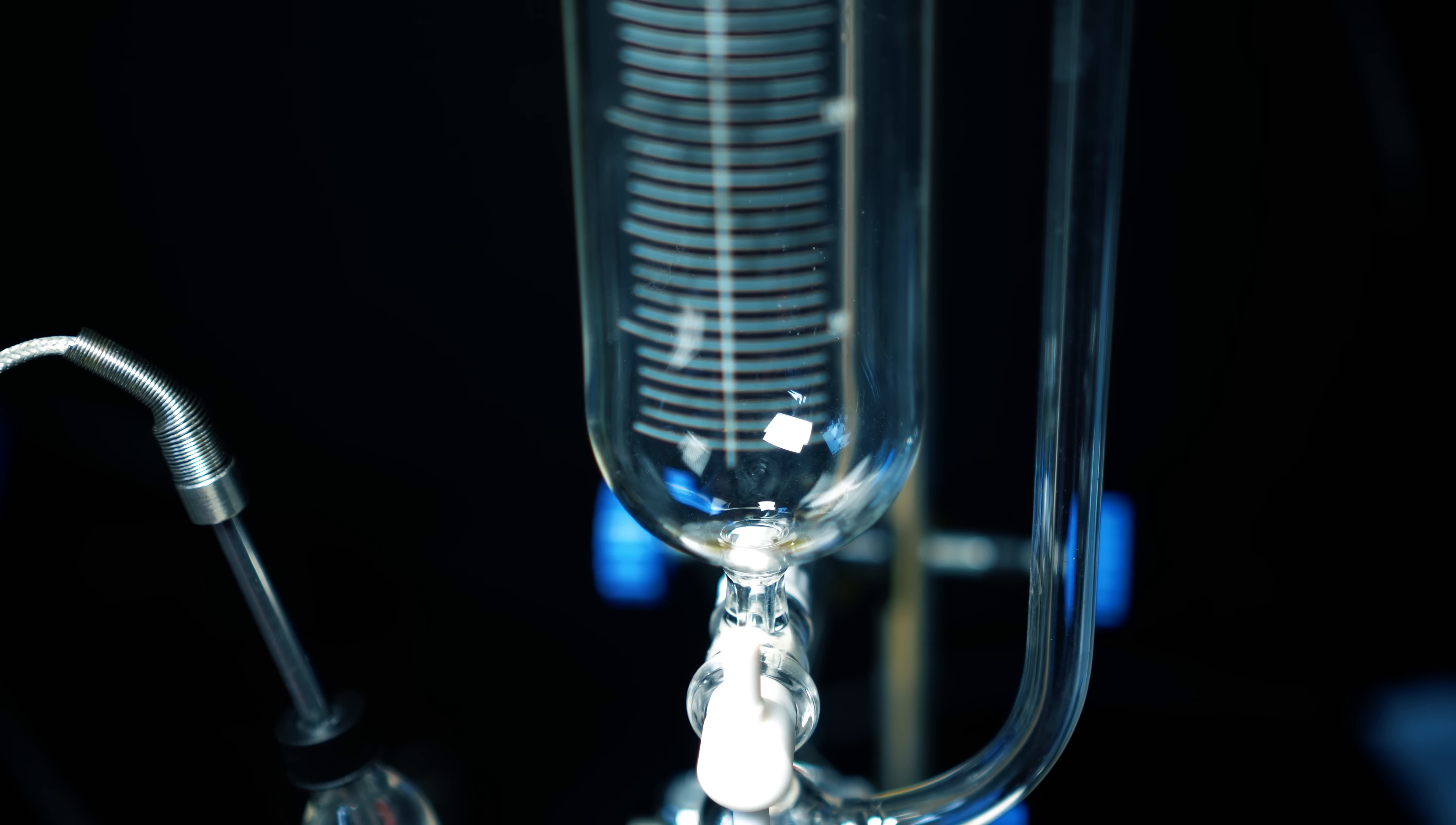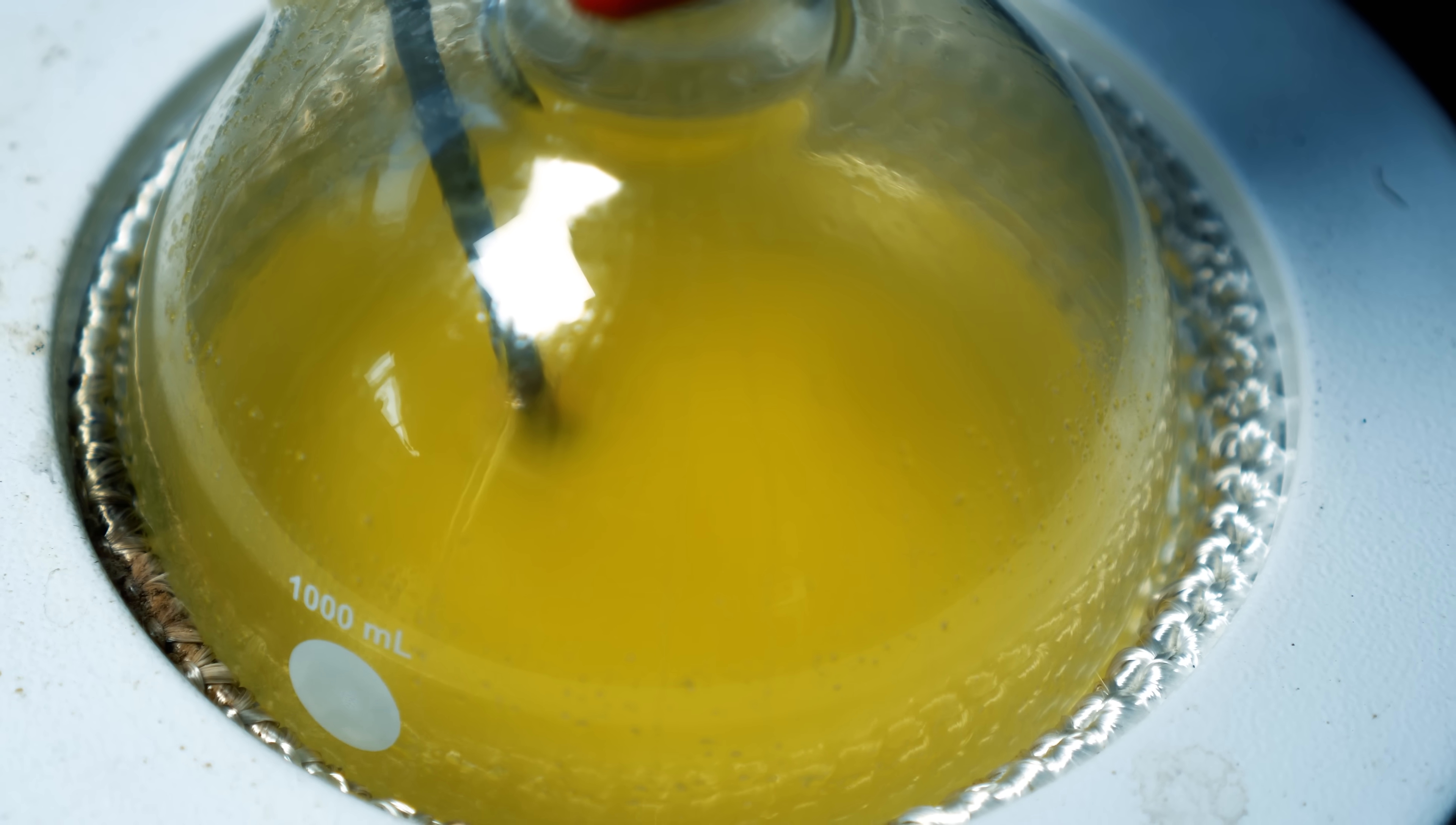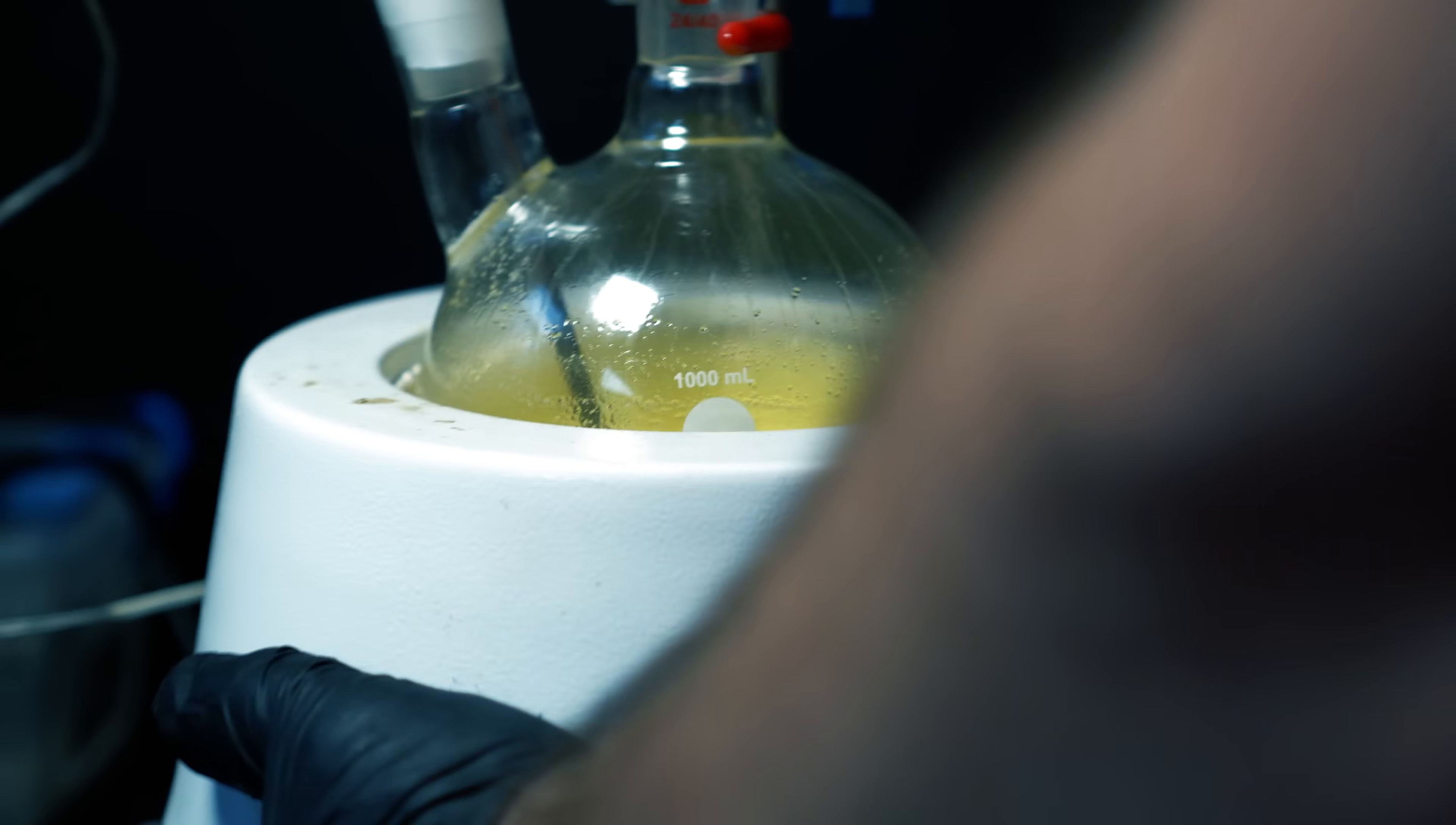Once all the methyl iodide was added, we now need to heat this up to 50 degrees celsius and leave it for 3 hours. When I looked in the reaction flask, I noticed it was looking suspiciously thick. Now, of course the stir bar wasn't working, so I had to manually swirl this around.